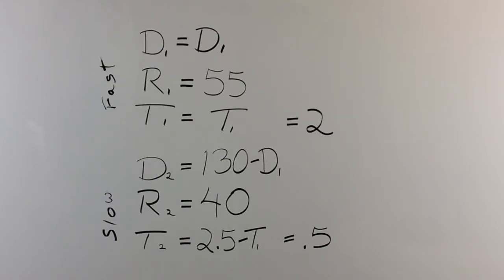Rate times time. That's R2 times T2 would be 40 times .5 is 20. That's good. And the fast speed would be R1 times T1. That would be 55 times 2 which is 110 miles. And let's see. 110 miles plus 20 miles is a total trip of 130 miles. So all that pans out. So that's all correct. But that's just us checking our work.